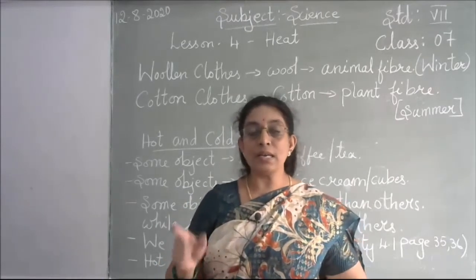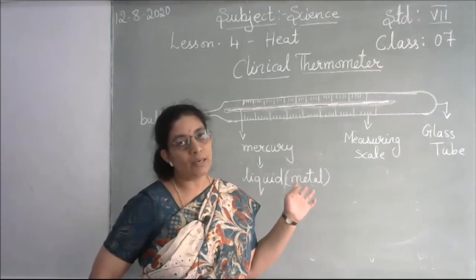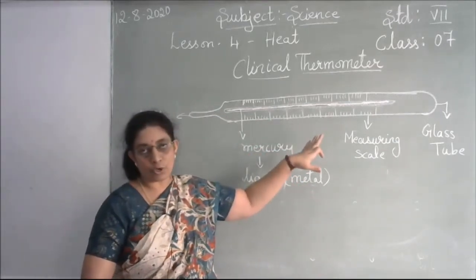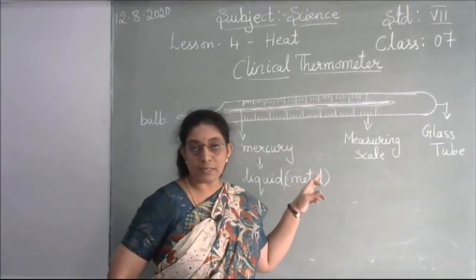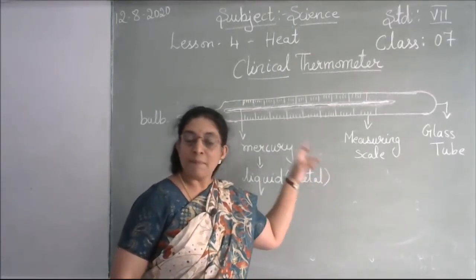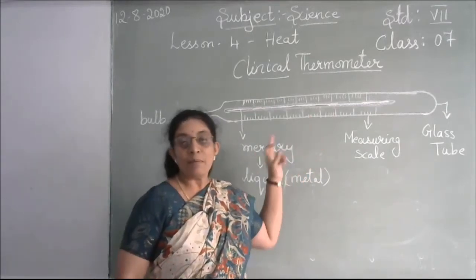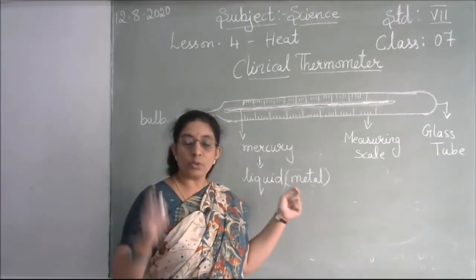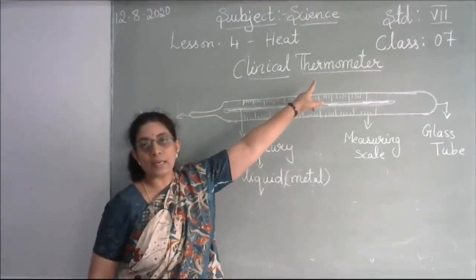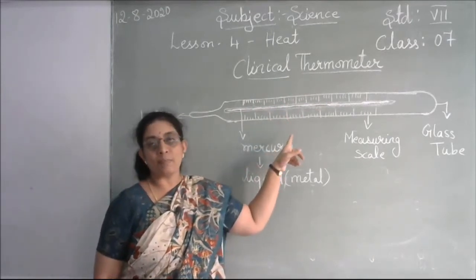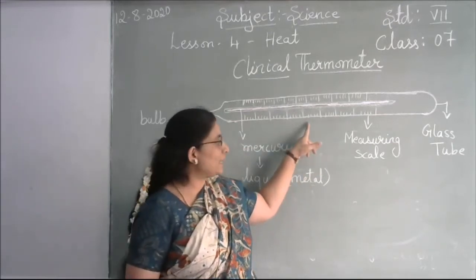Now let's see how a clinical thermometer looks. I have drawn a rough diagram. Presently most hospitals use digital thermometers, but some still use this type. The clinical thermometer is made out of glass. Since glass is transparent, you can see through it. On the glass tube, there is a measuring scale — just like the measurements on your ruler.